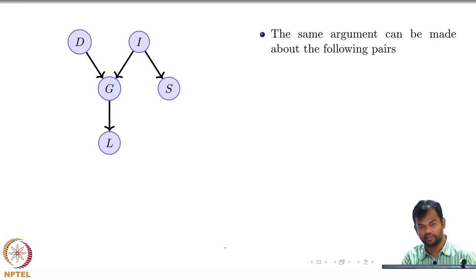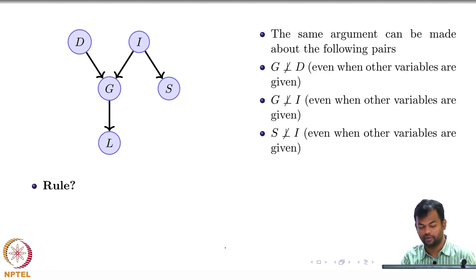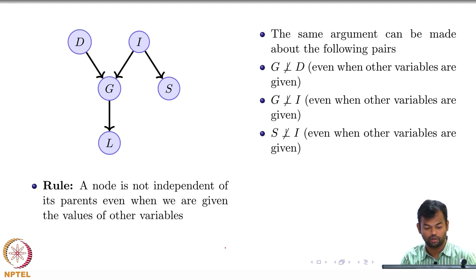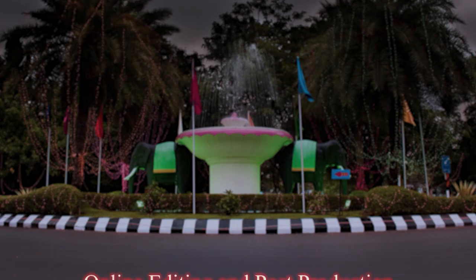Then the same argument can be made about which other pairs? We made about G and L. What are the other pairs that you can make this argument about first? I and G, D and G, I and S, right? So all of these, you will have to make the same assumption, and the same rule holds here.